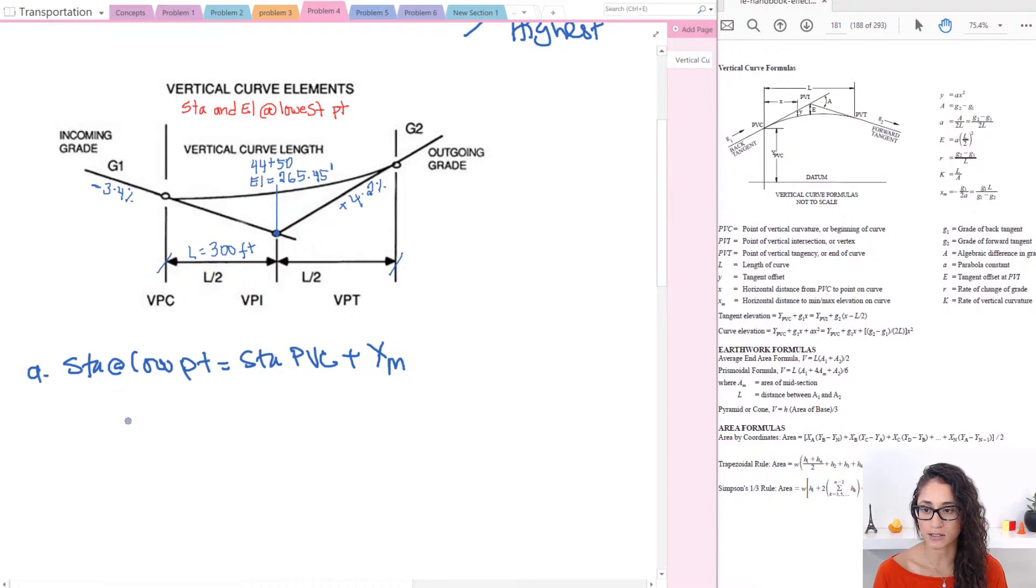So let's first calculate the station at PVC. We have station at PVC equals the station at PVI minus L over 2. If you haven't watched my previous video where I provide all the necessary equations that you have to remember, make sure you check it out. I will leave the link above. It's important because these equations are not provided to you on the reference handbook.